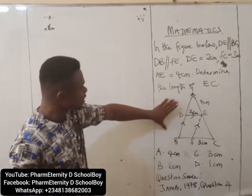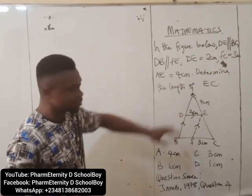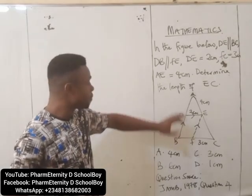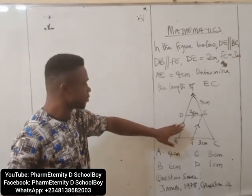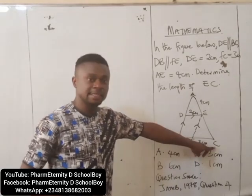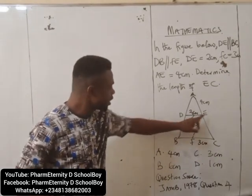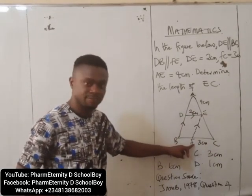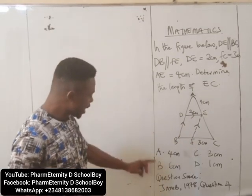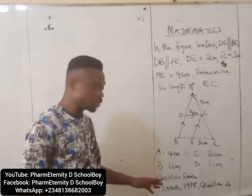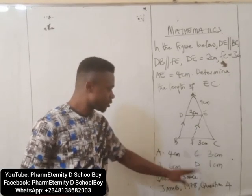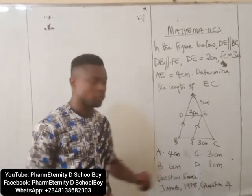This is the diagram. In this diagram we have a triangle and a parallelogram. ABC is a triangle and DEBF is a parallelogram. Here are the options. The question source is JAMB 1978, Mathematics, Question 4.